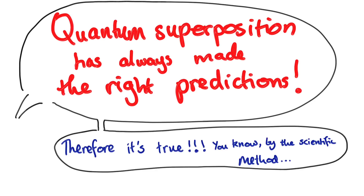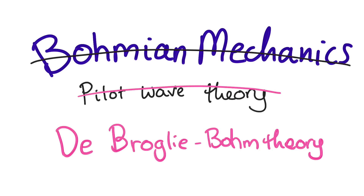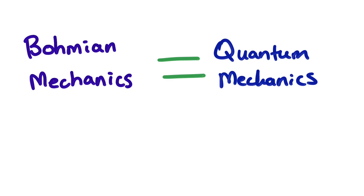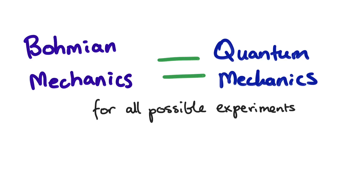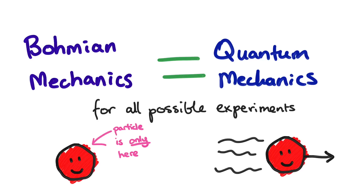Then came Bohmian mechanics. The aim of this theory is to explain all the same experimental data as quantum mechanics can, but without superposition. In fact, you can prove that Bohmian mechanics produces exactly the same results as quantum mechanics for all possible experiments, but the objects in this theory are always in one place and they have one speed. How is that possible? Let's look at the double slit experiment to understand.